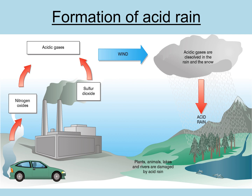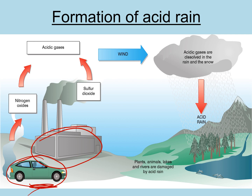So how is acid rain formed? Starting with a car and a factory or power station, both are burning fossil fuels — coal, oil, and petrol from oil. The exhaust fumes from the car and the flues from the factory give off nitrogen oxides and sulfur dioxide. Sulfur dioxide is formed when impurities from fossil fuels are burned and react with oxygen. Nitrogen oxides are formed when nitrogen in the air is forced to react with oxygen due to high heat and the enclosed space.